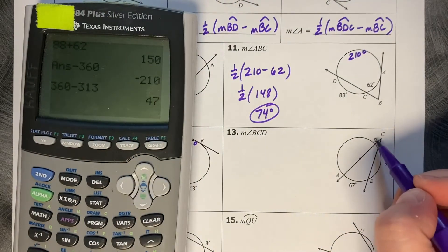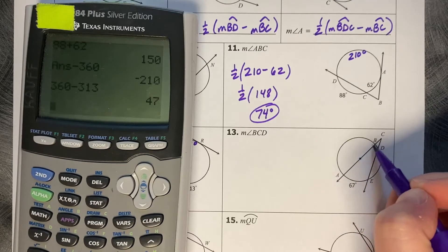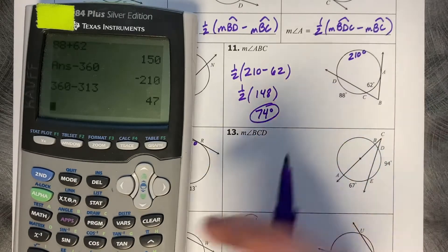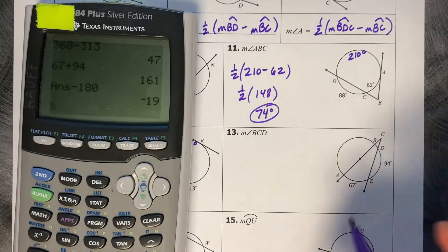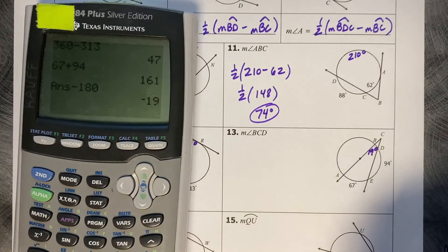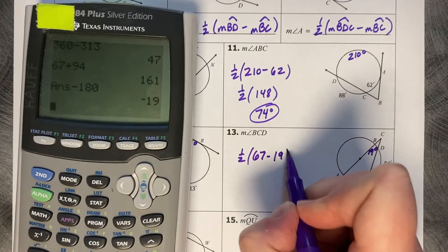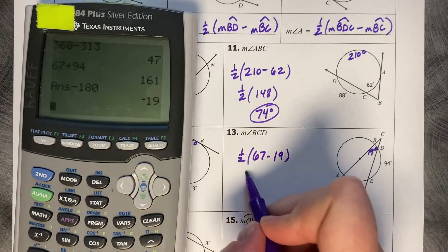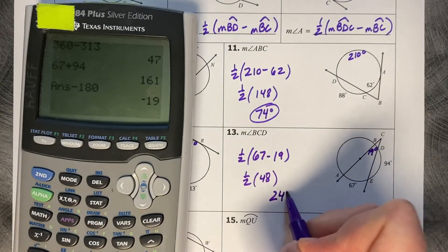For angle BCD, I know the big arc but not the small one. I can see this is a diameter, so the three arc pieces together make 180 degrees. So 180 minus 67 minus 94 is 19 degrees for the small arc. Then one half the big minus the small — 67 minus 19 — a half of 48, which is 24 degrees.